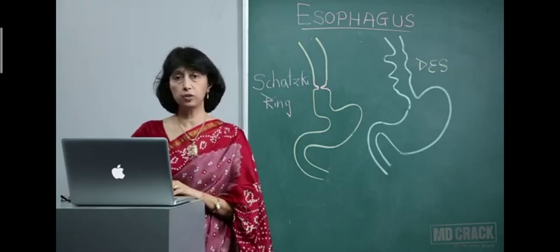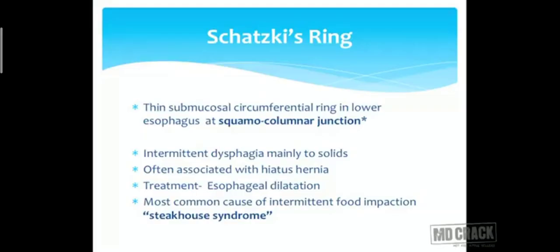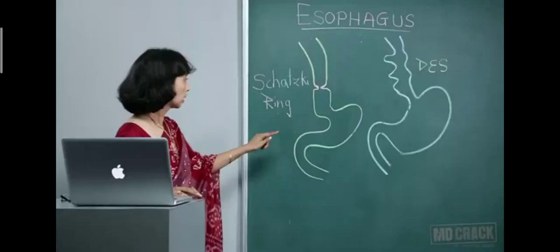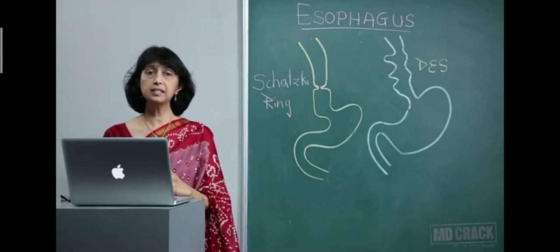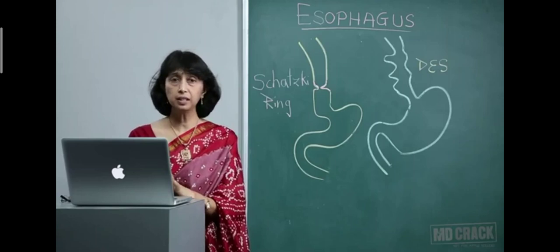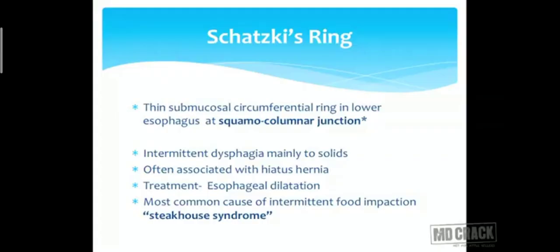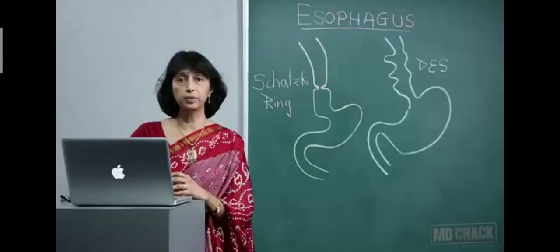Schatzky ring is located at the squamocolumnar junction of the lower esophagus and is present from birth. It causes intermittent dysphagia mainly for solids — sometimes the esophagus relaxes enough for food to pass, other times food gets stuck. It is often associated with hiatus hernia. Treatment is simple dilation at the point of the ring. Repeated food impaction causes halitosis, and this is also called Steakhouse syndrome.